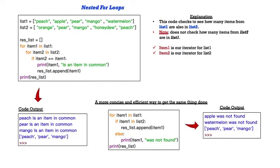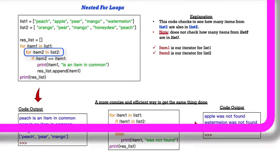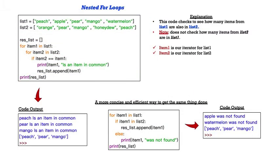And here we take a look at nested for loops. If you notice in the code to the upper left-hand side, we have a for loop within a for loop. So let's go through this code. We have two lists up at the top, list 1 and list 2. This code checks to see how many items from list 1 are also in list 2. Note, this does not check how many items from list 2 are in list 1. It goes one way only.